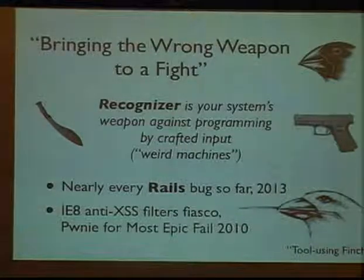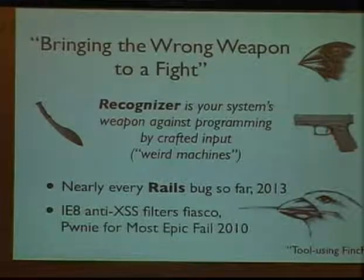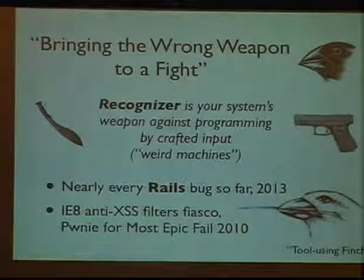The recent Rails bugs were an example of that. There's a wonderful bug that happened in 2010 that got the pony for most epic fail — the anti-XSS Internet Explorer measure. In applying a finite state machine to rewriting HTML, which is actually worse than context-free, they got pages that were not vulnerable to XSS to become vulnerable to XSS. The principle we're advocating is that you have to bring the right recognizer that matches the input you're consuming.